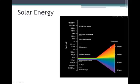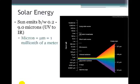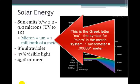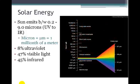So our sun emits between 0.2 to 9 microns. That spans between the ultraviolet and the infrared range. And here's the breakdown: it's about 8% ultraviolet, 47% visible light, and then 45% infrared.